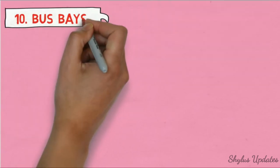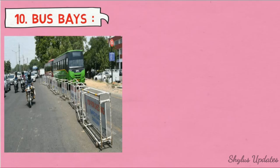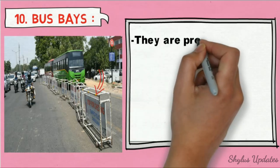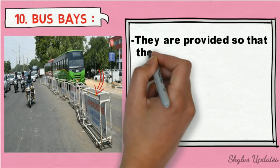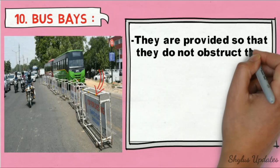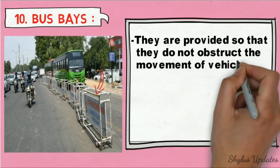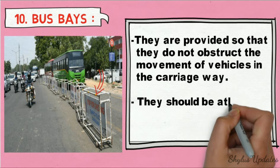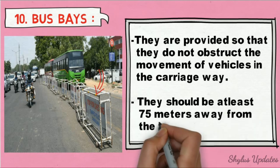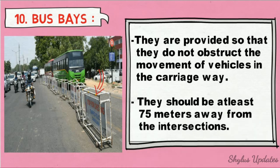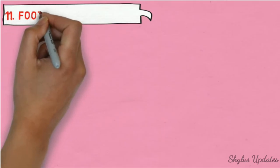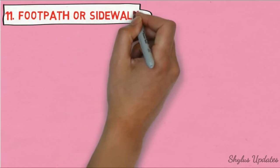Bus bay. They are provided so that they do not obstruct the movement of vehicles in the carriageway. They should be at least 75 meters away from intersections. They are also provided for the safety of pedestrians. Footpaths or sidewalks.